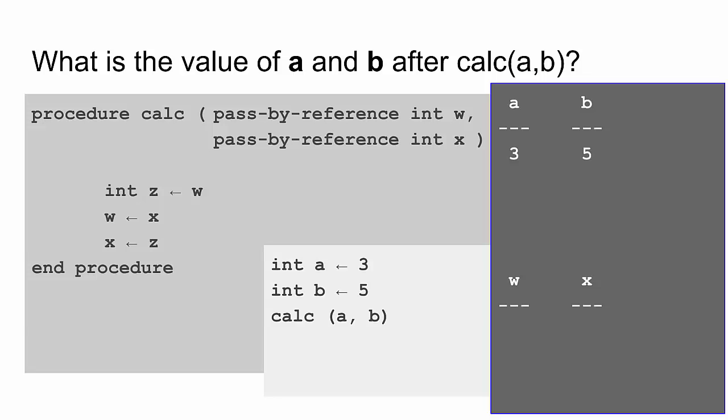So here's our scratch paper. We start out with a being assigned the value 3, b being assigned the value 5. Now when I call calc a and b, w is just a reference back to a, and x is a reference back to b. So whenever I'm asked what is the value of w, well, I go look at a and find that it's 3. Whenever I'm said set the value of x, I actually go up to b and change the value of b up there. So let's follow this code. It says int z is assigned the value from w. So there's our int z. What is the value from w? Well, I have to go look in a and find out that it's 3. So z gets the value 3.